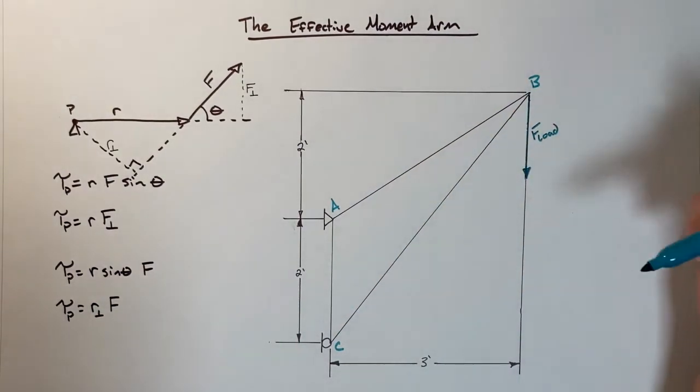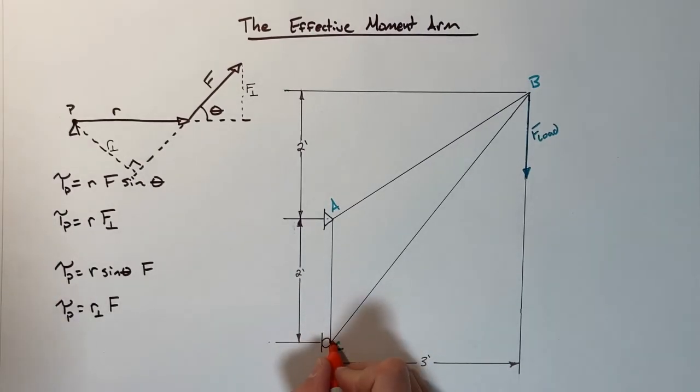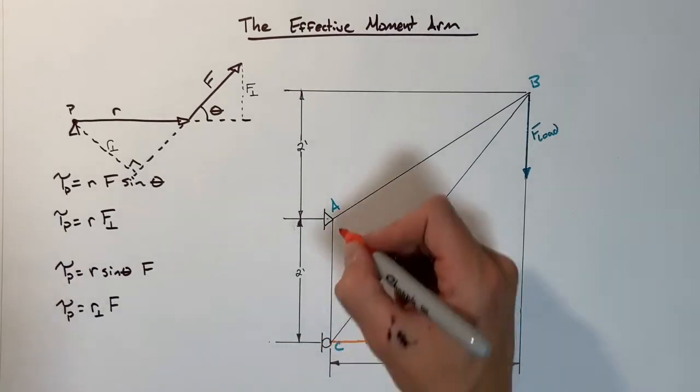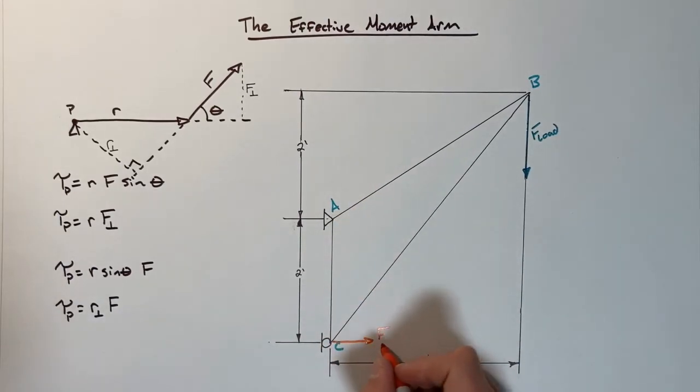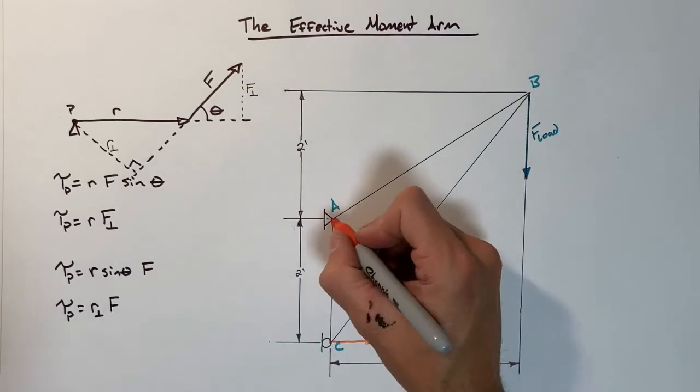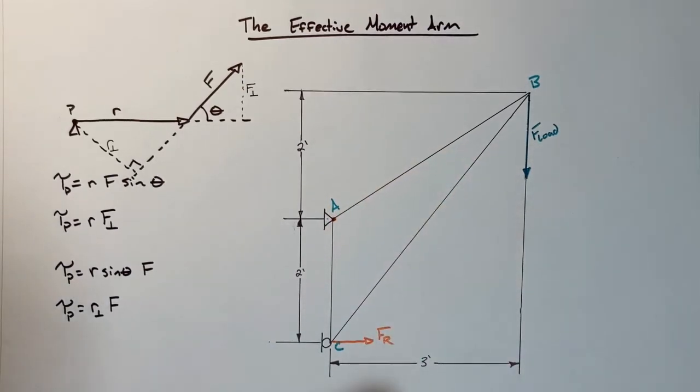This is just a cantilevered beam or cantilevered truss. It's supported by a pin and a roller up against some sort of vertical wall. Typically if we go through and try to solve a truss, the first thing we do is we solve for the reaction forces at each of the supports. If we're trying to solve for the reaction force at the roller here, that reaction force is going to be out this way.